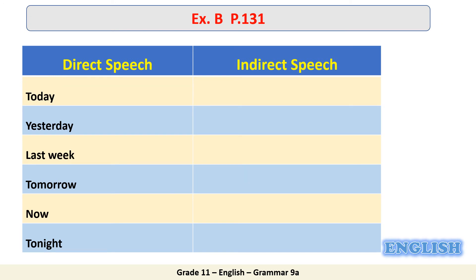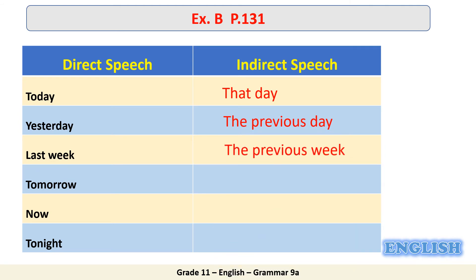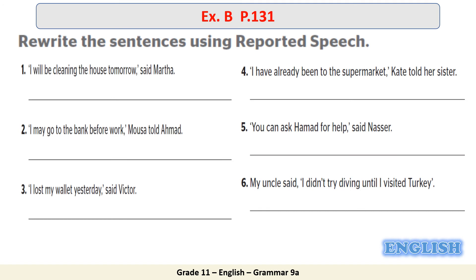We finish this task by looking at the changes in the adverbs or expressions of time. 'Today' in the direct speech becomes 'that day' in the indirect speech. 'Yesterday' becomes 'the previous day.' 'Last week' becomes 'the previous week.' 'Tomorrow' becomes 'the next day.' 'Now' becomes 'then.' And finally, 'tonight' becomes 'that night.' Pause the video and try to rewrite the six sentences in the indirect speech, paying attention to the pronouns, verbs, modal verbs, and adverbs of time.